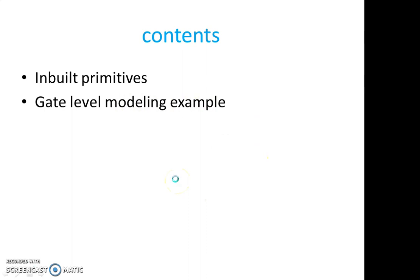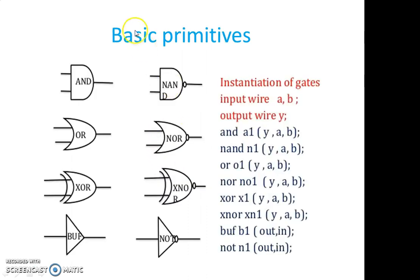Let us see what all the primitives are available. The basic primitives that have been already available in the system are: AND gate, NAND gate, OR, NOR, XOR, XNOR, buffer, and NOT.